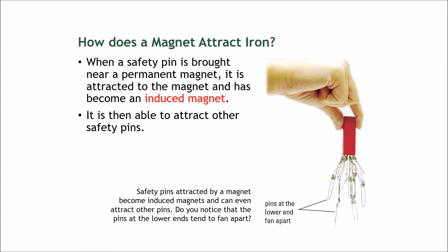How does a magnet attract iron? When a safety pin is brought near a permanent magnet, it is attracted to the magnet and becomes an induced magnet. This is like the first layer—the safety pins are attached.